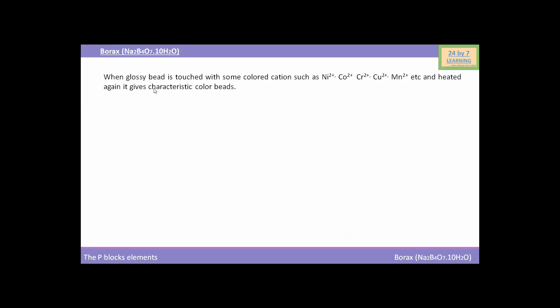When glossy bead is touched with some colored cations such as nickel 2+, cobalt 2+, chromium 2+, copper 2+, manganese 2+, etc. and heated again, then it gives characteristic color beads. Here is the reaction showing this.